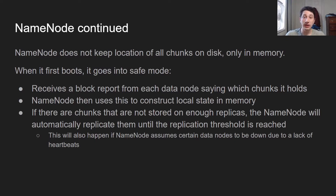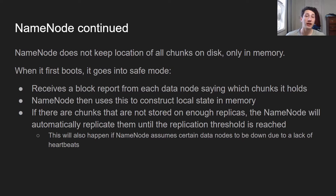The name node actually only keeps the location of all the chunks in memory. So when it first boots, the name node goes into safe mode and receives something called a block report from each data node, where the data node tells it which chunks are held on that data node. The name node compiles all of this information, constructs its local state, and if it sees that only one replica is holding a given chunk but the user has specified a replication factor of three, it's going to go ahead and replicate that chunk to two other nodes to reach the replication threshold. The same thing occurs if the name node assumes a given data node is dead because it hasn't received any heartbeats from it for a while.